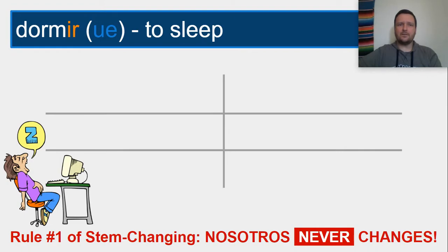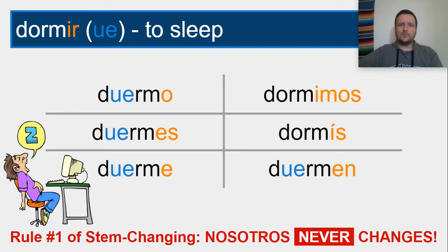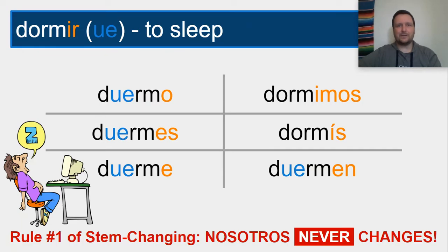Next we have dormir, 'to sleep.' Pause and write your verb tree, then unpause. The forms of dormir are: duermo, duermes, duerme, dormimos, dormís, duermen. What you may have noticed with these last three verbs — poder, almorzar, and dormir — is that stem changing can affect all verb types: ER's, AR's, IR's — any of them can be a stem changer.